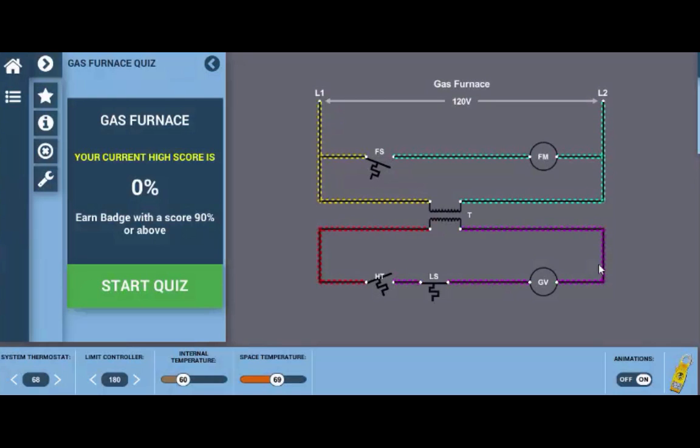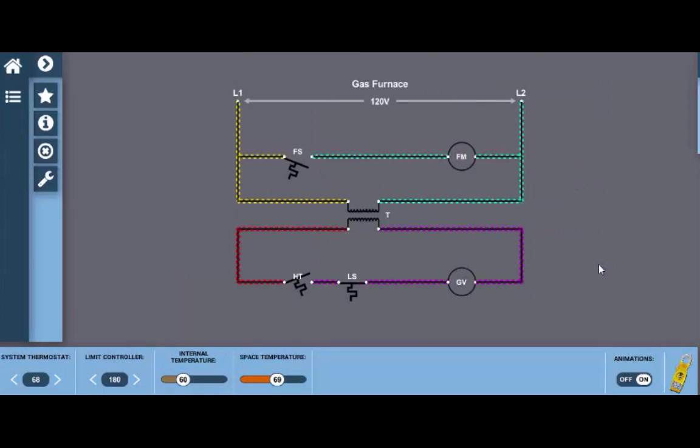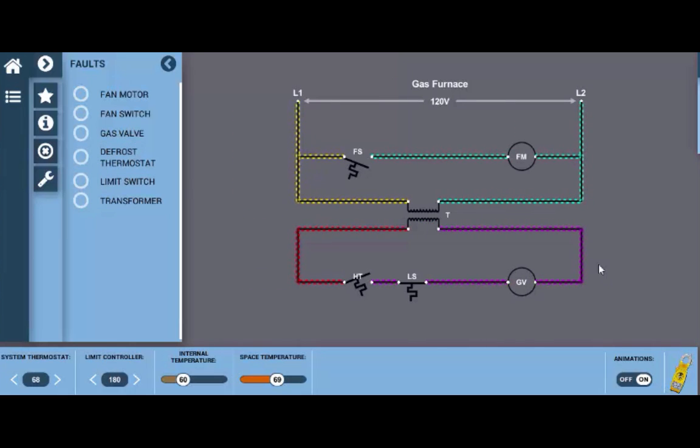once it launches you'll be able to select from a series of faults to see what these faults look like. In addition you'll also be able to take a quiz to test your mastery level of this particular wiring diagram. So now to launch the fault list we have this little x within the circle it's the third one down we click on that and you can see we can place faults in any of the components here.